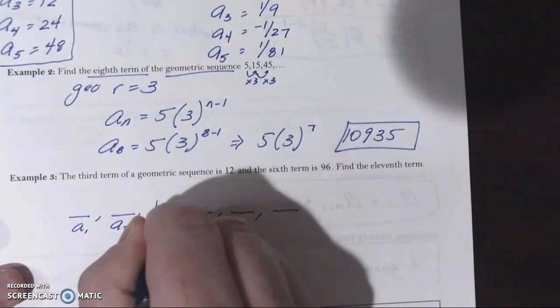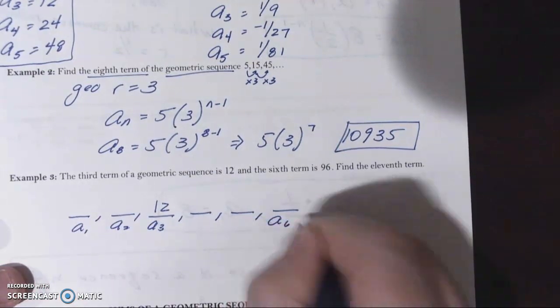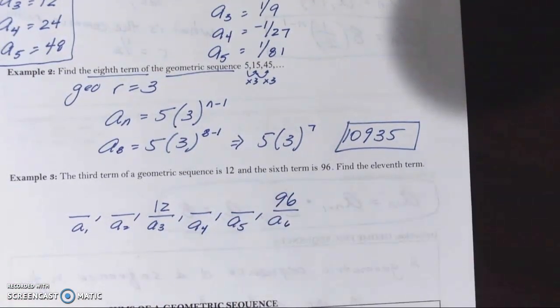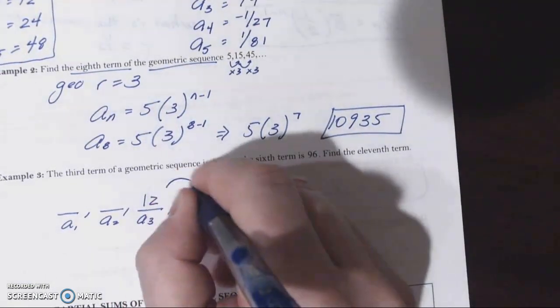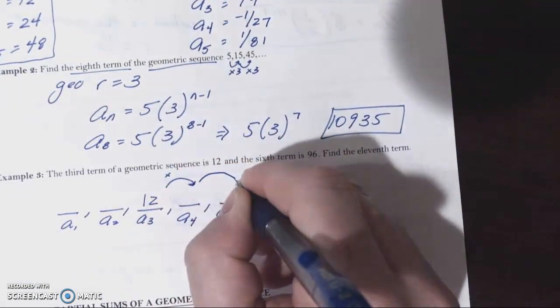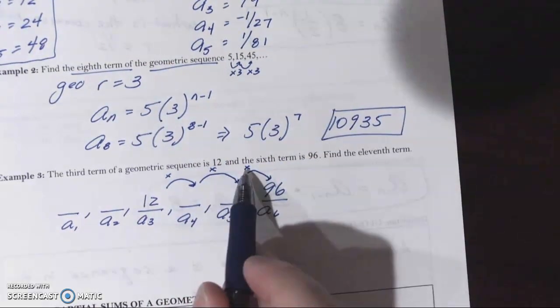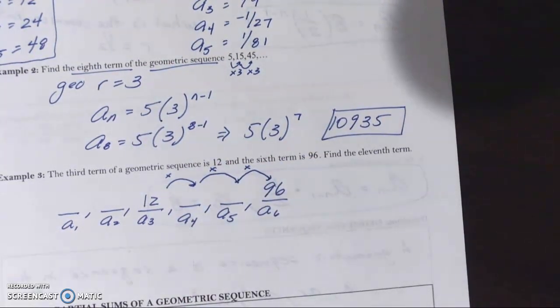So here we go. So the first term, the second term, the third term, the sixth term, the fourth term, the fifth term. We don't know some of these, but we do know two of them, 12 and 96. Now we know that between the third and the sixth term, we're going to multiply three times. We don't know what the common ratio is just yet. We know we're going to multiply three times. So let's call this n.